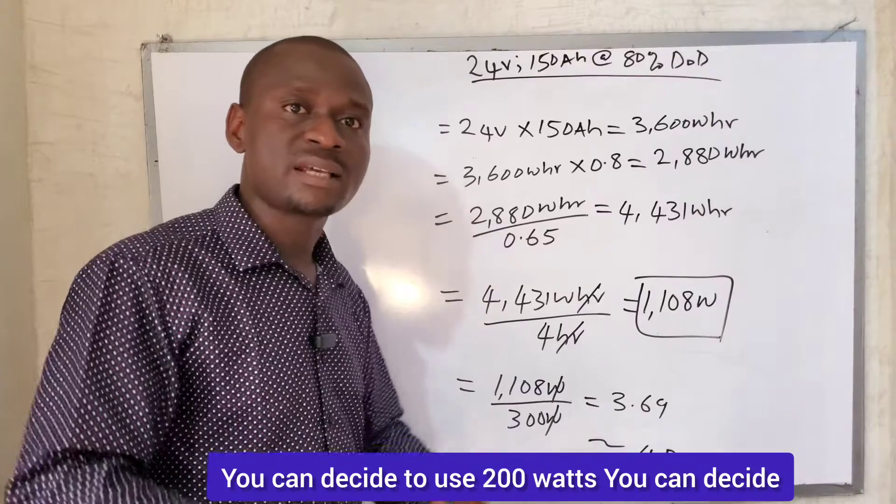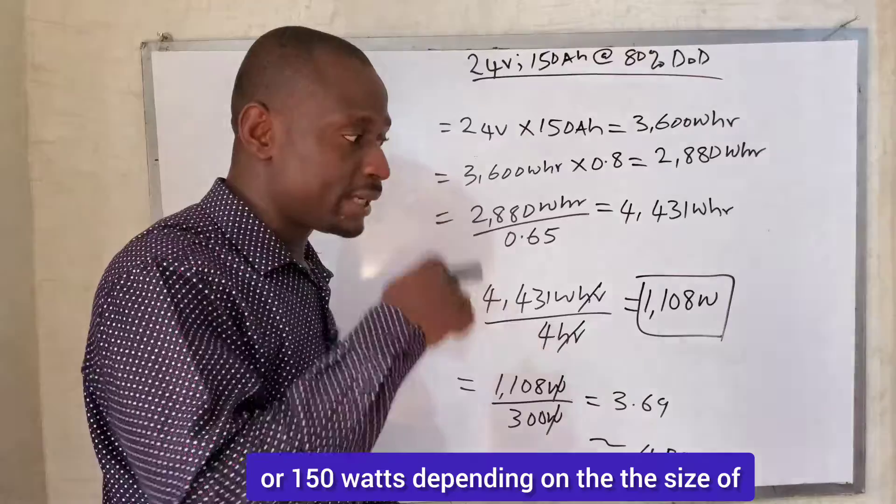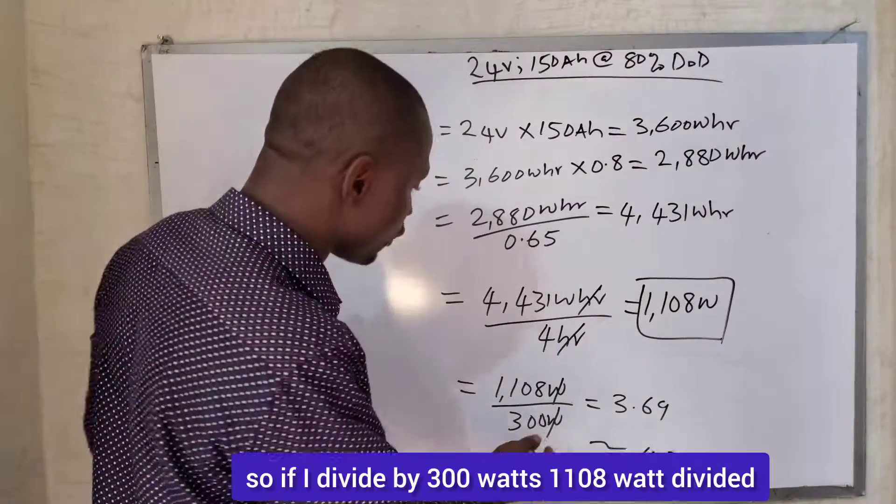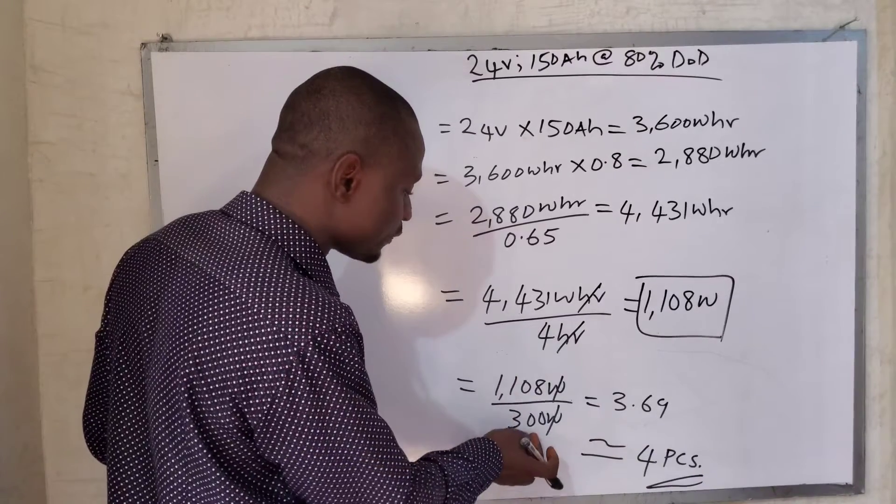You can decide to use 200 watts, you can decide to use 500 watts or 150 watts, depending on the size of solar panels you have in the market. So if I divide by 300 watts...